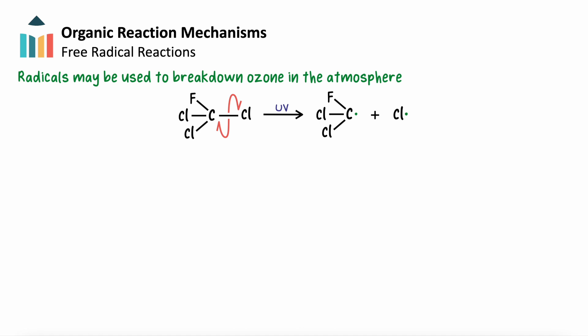We call this reaction the initiation step, as the production of chlorine radicals will set off a chain reaction. This radical can react with an ozone molecule to produce O2 and a new radical containing chlorine and oxygen.